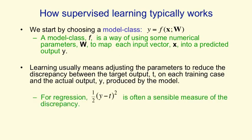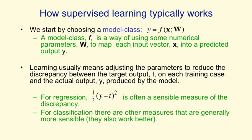An obvious measure of that discrepancy, if we're using real values as outputs, is the squared difference between the output from our system y and the correct output t. We put in that half so it cancels the two when we differentiate. For classification, you could use that measure, but there are other more sensible measures which we'll come to later, and these more sensible measures typically work better as well.